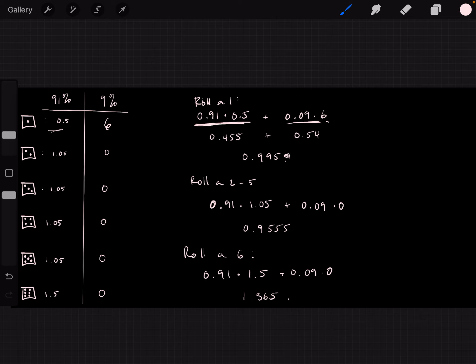If you roll a 2, 3, 4, or a 5, then your expected return would be 0.9555. And if you roll a 6, then your expected return would be 1.365.